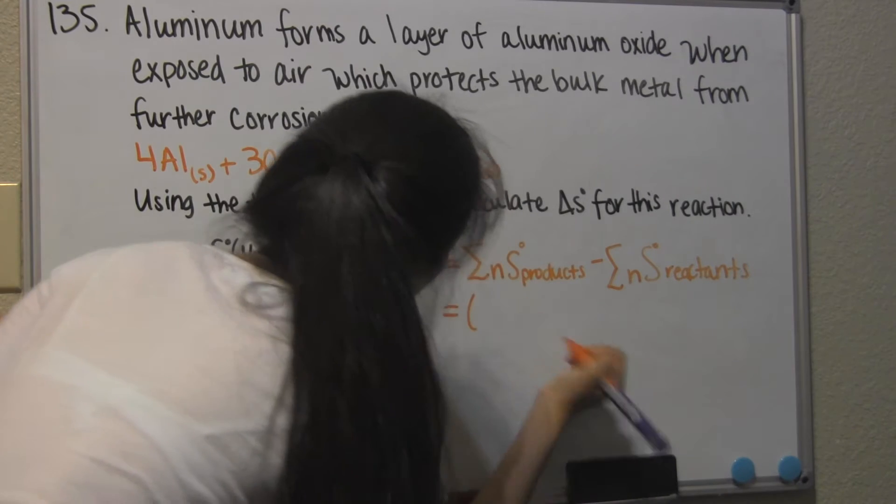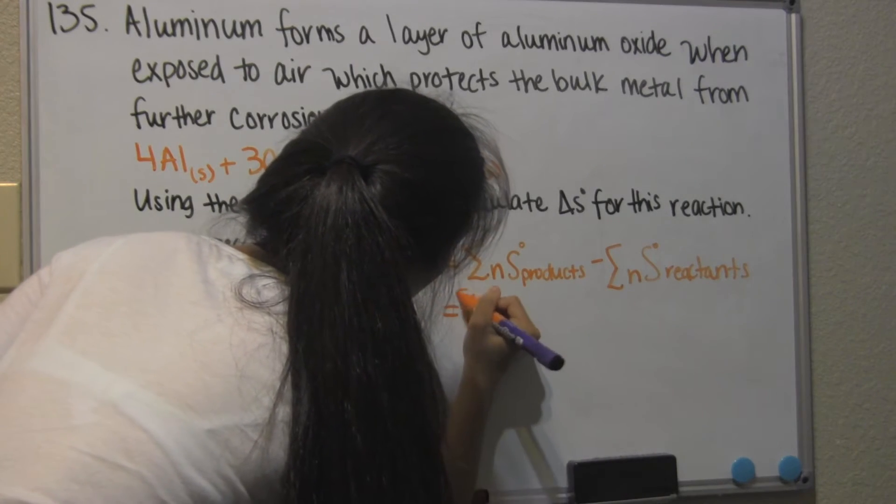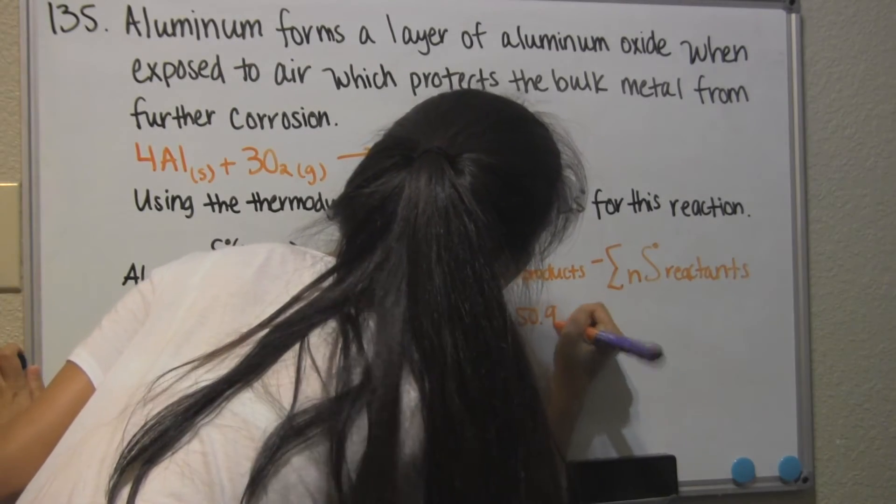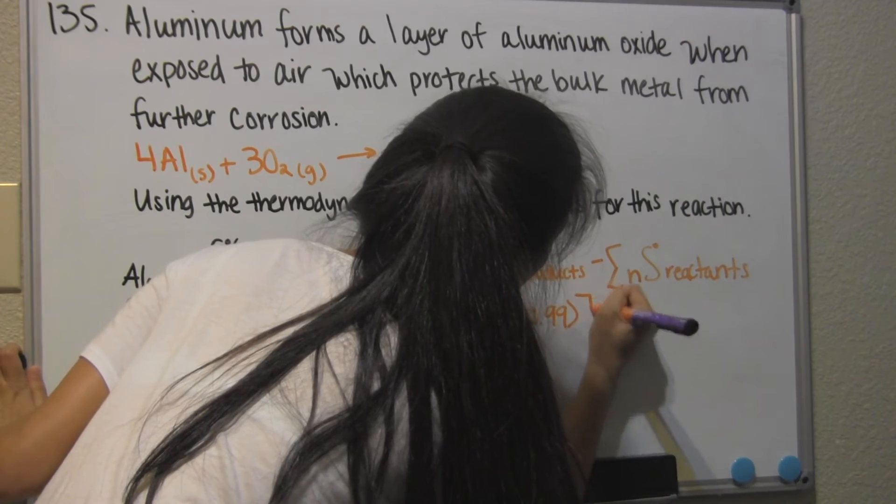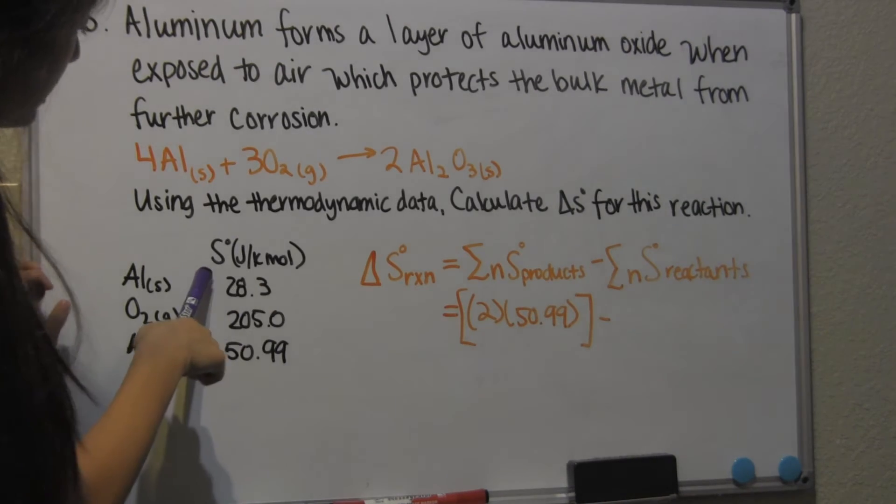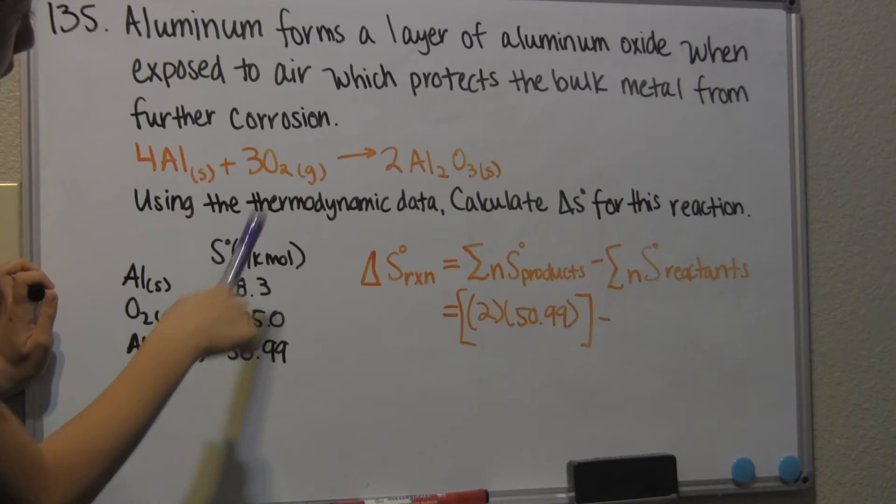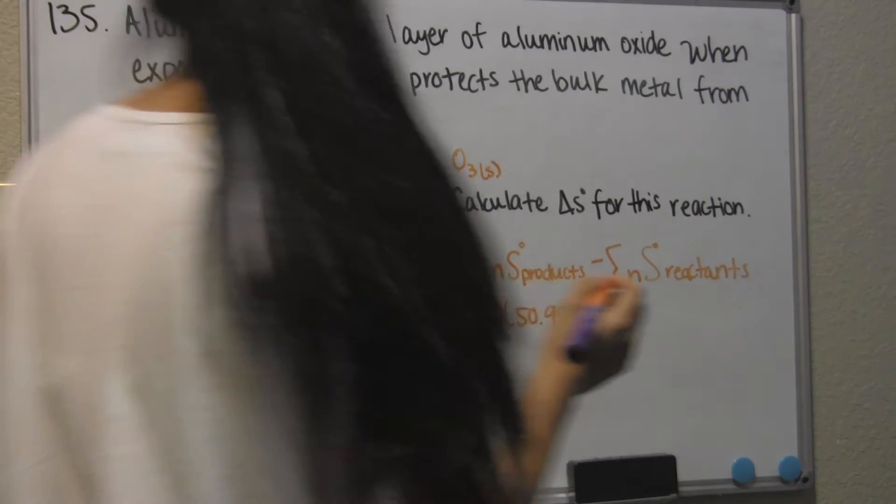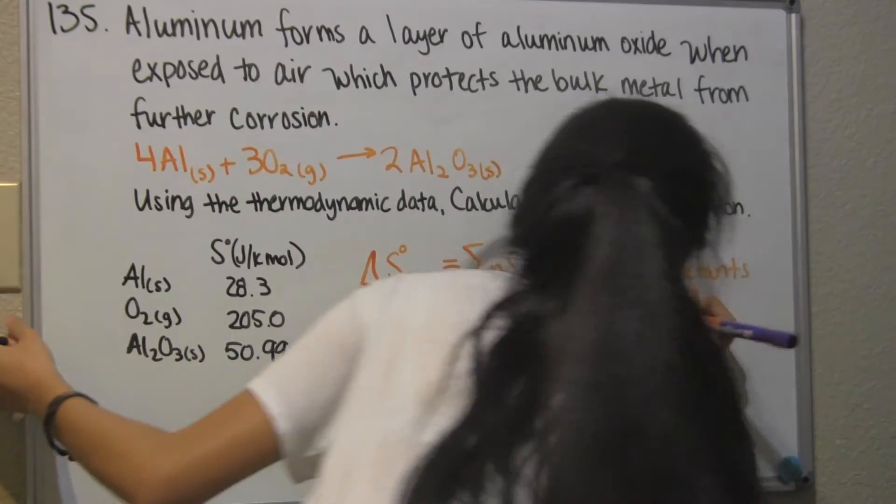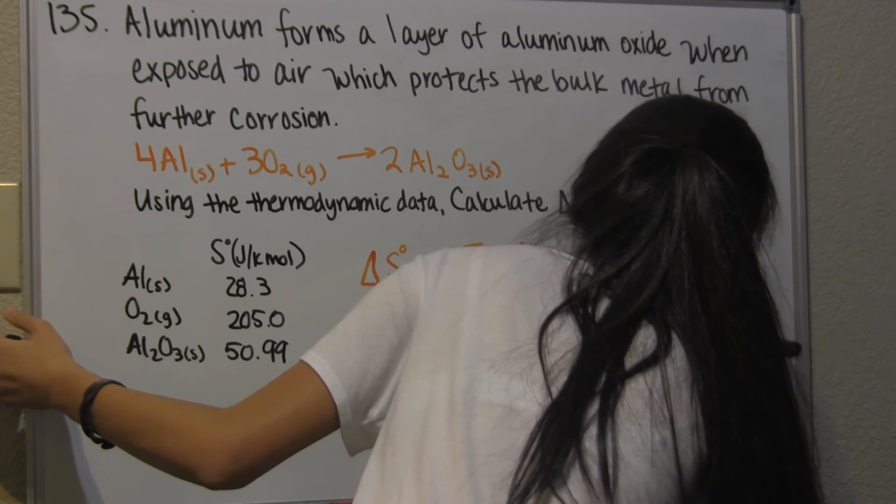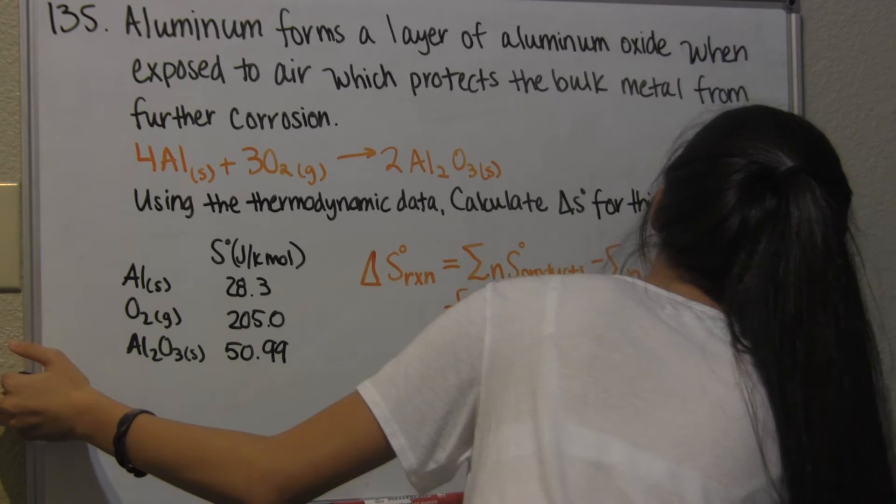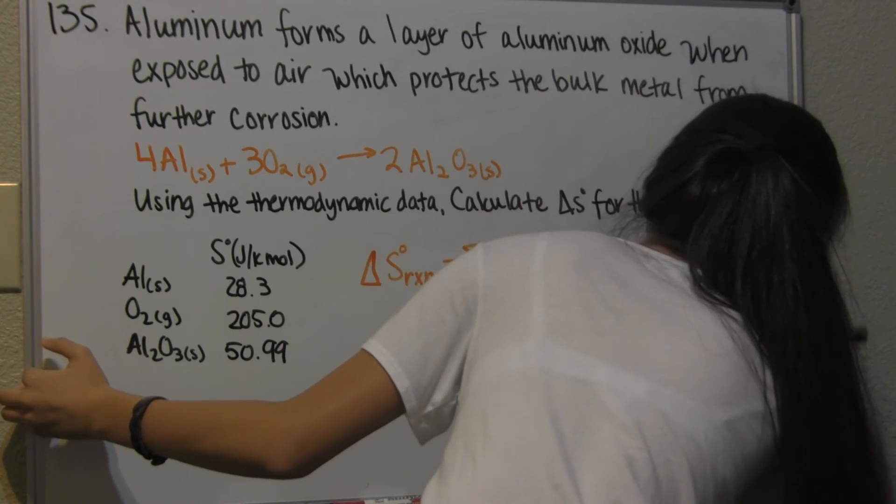So it's going to be 2 times 50.99 minus 4 times 28.3 and 3 times 205. So 4 times 28.3 plus 3 times 205.